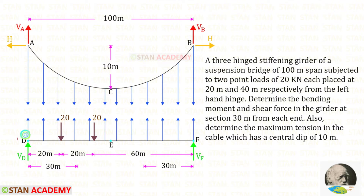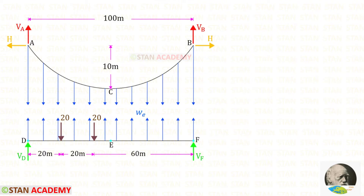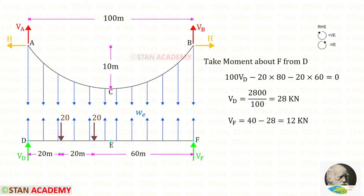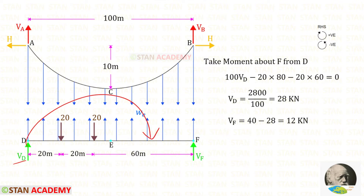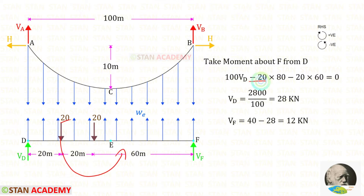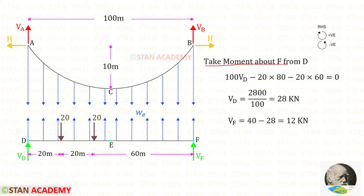Let us keep the left side hinge as D, the central hinge as E, and the right side hinge as F. In the suspenders we have to find the equivalent uniformly distributed load WE. From the cable it will be acting downwards and from the girder it will be acting upwards. Now in the girder let us find the vertical reaction VED. For that I am going to take moment about F. When we take moment we have to only consider the girder. VED is acting in the clockwise direction so that it will be positive and the distance is 100. This load is acting in the anti-clockwise direction so that it will be negative and the distance is 80.